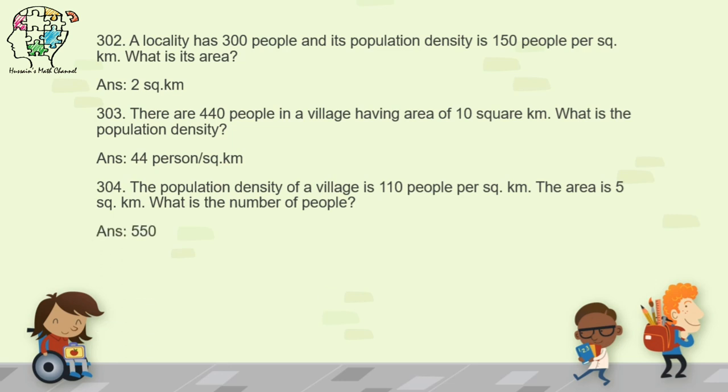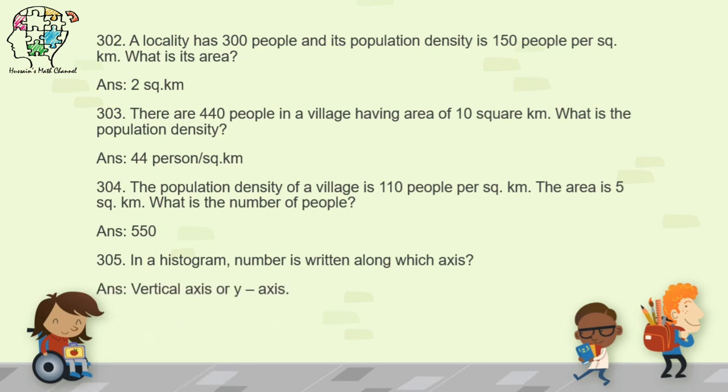Question 305: in a histogram, the number is written along which axis? In a graph there are two axes — the horizontal axis (x-axis) and the vertical axis (y-axis). The number is always written along the y-axis or vertical axis. You can write either vertical axis or y-axis.